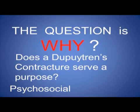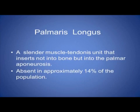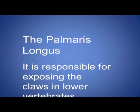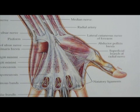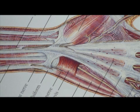Getting back to the question of does Dupuytren's contracture serve a purpose — Dr. Ryan, in the hand clinics, talked briefly about the palmaris longus extending into the palmar aponeurosis. It's a strange phenomenon: it's a tendon but doesn't insert into bone. The only thing I could find was that it was responsible for exposing claws in lower vertebrates. And you can see the palmaris longus merging into that palmar aponeurosis.